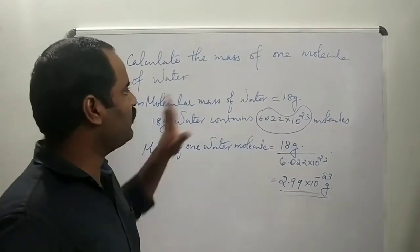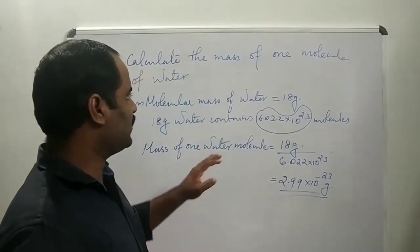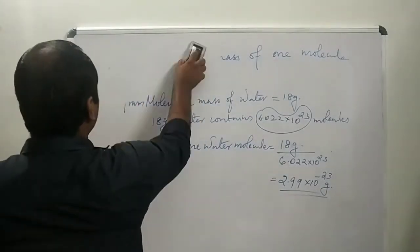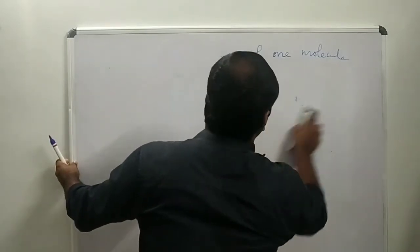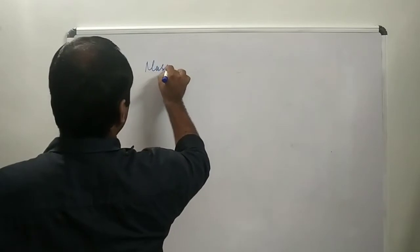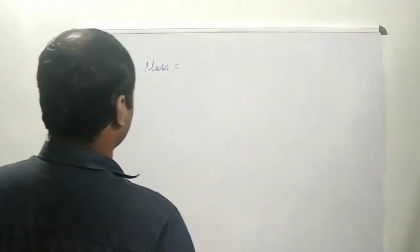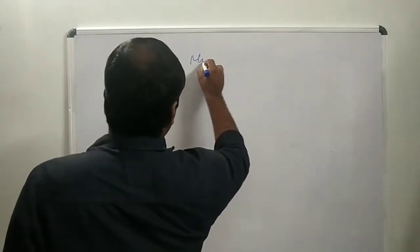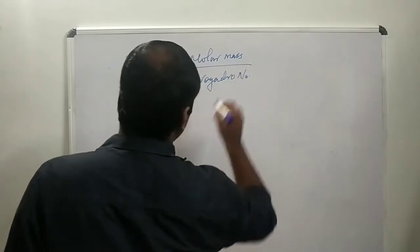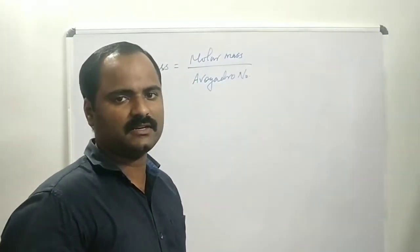If you want to calculate the mass of one atom or molecule, you have to divide the gram atomic mass or gram molecular mass by Avogadro's number. From these numerical questions we can derive that the mass of an atom or molecule can be calculated by the equation: mass = molar mass divided by Avogadro's number.